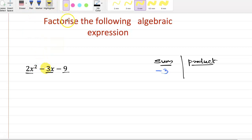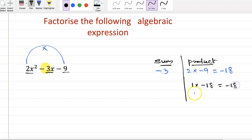And product, we have to multiply 2 into minus 9, so it becomes minus 18. Let us find the factors of 18: 1 into minus 18, 2 into minus 9, 3 into minus 6 are all minus 18.